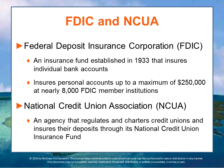The Federal Deposit Insurance Corporation insures individual bank accounts. It was established in 1933 to help stop bank failures throughout the country during the Great Depression. Today, the FDIC insures personal accounts up to a maximum of $250,000, at nearly 8,000 FDIC member institutions. The National Credit Union Administration — NCUA — regulates and charters credit unions and insures their deposits through its National Credit Union Insurance Fund.